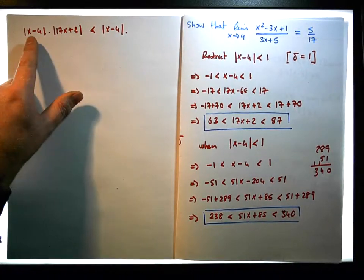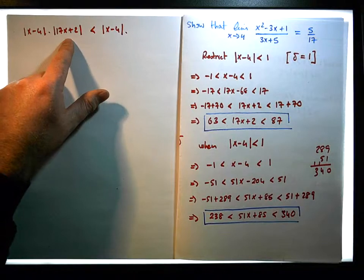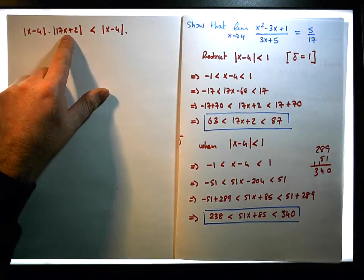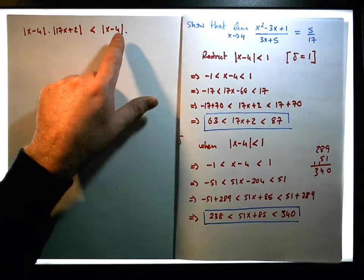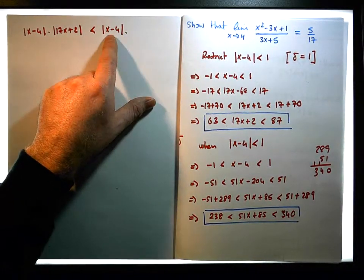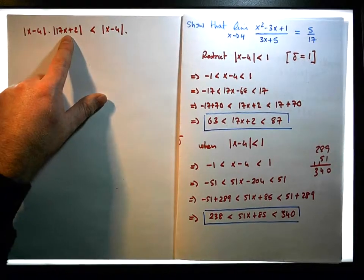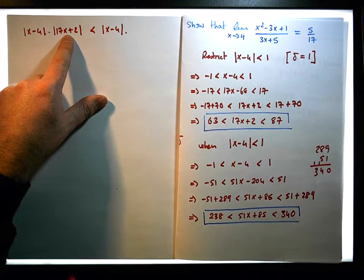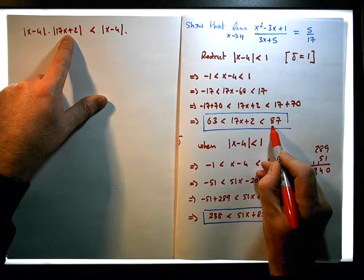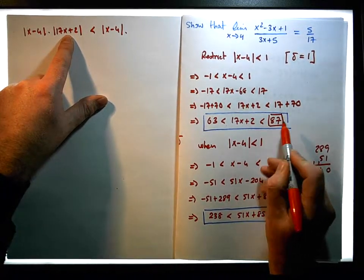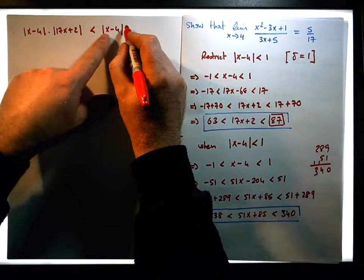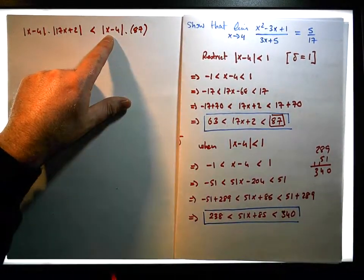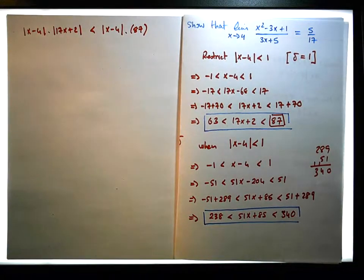So because if x minus 4 times 17x plus 2 — if I can multiply x minus 4 times a bigger number, well then this thing will in fact be less than x minus 4 times the bigger number. And we know a bigger number. We know a number that's bigger than 17x plus 2: it's 87. 17x plus 2 is always less than 87. So that means that x minus 4 times 87 must be less than that particular product here.